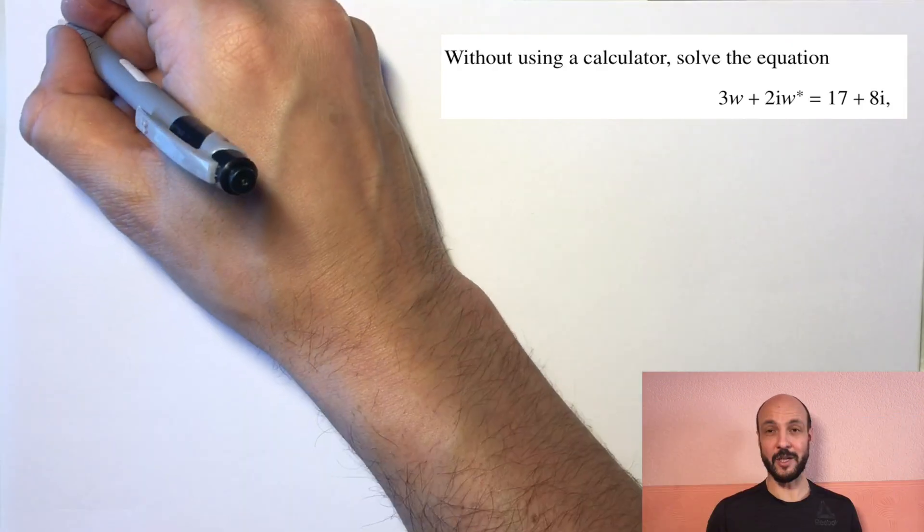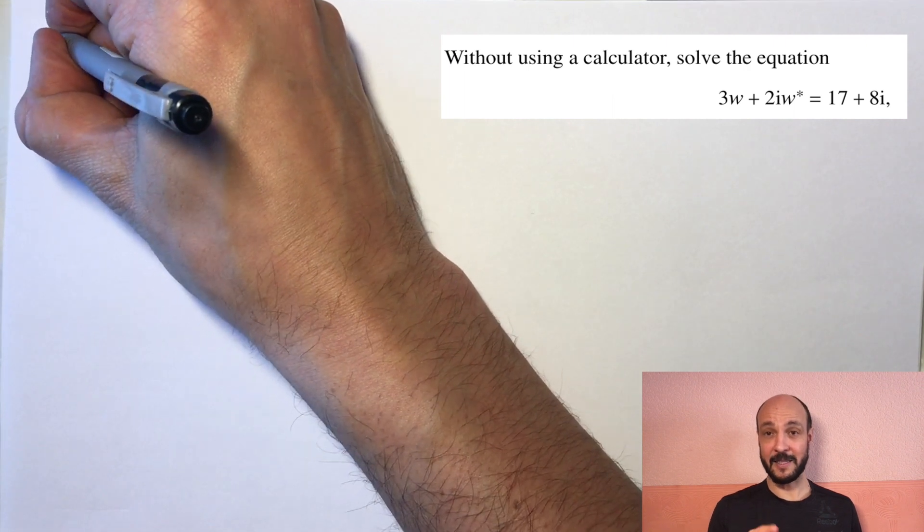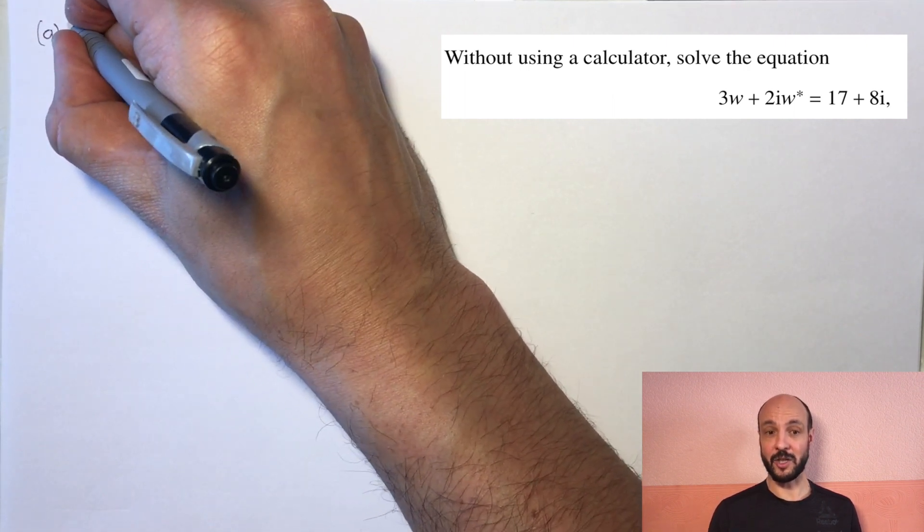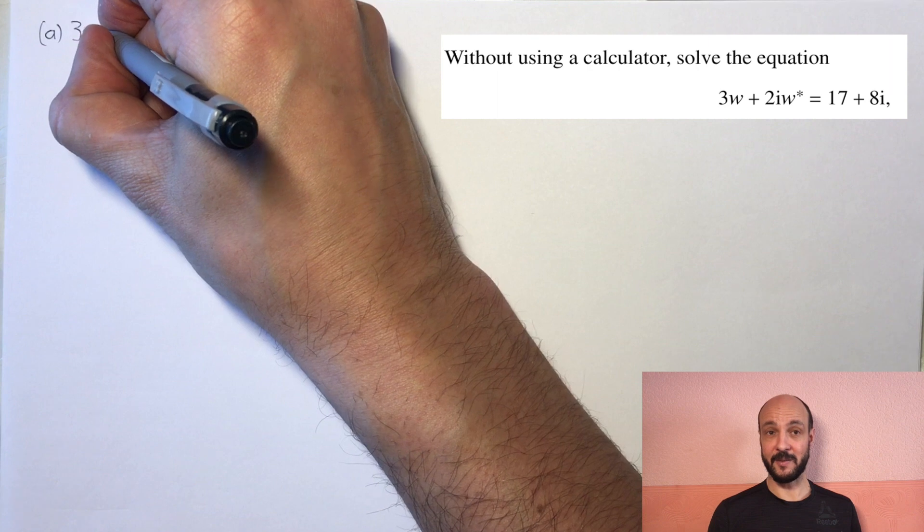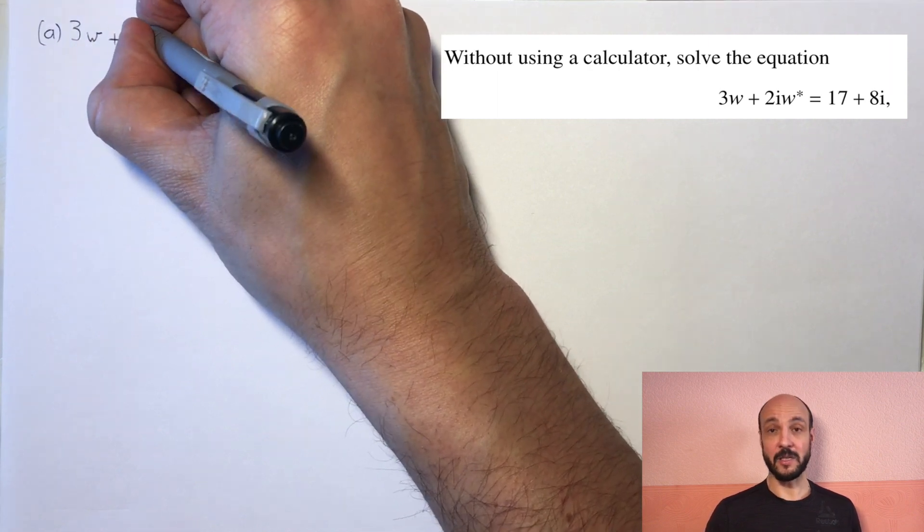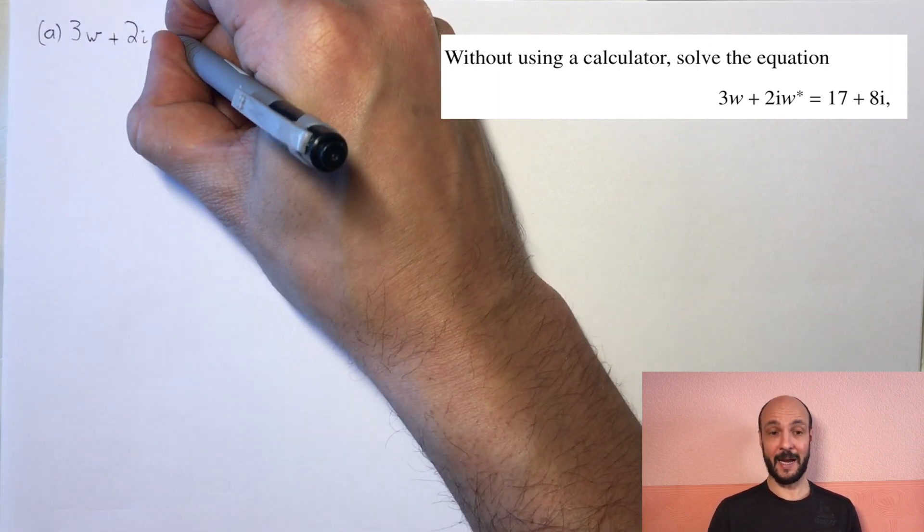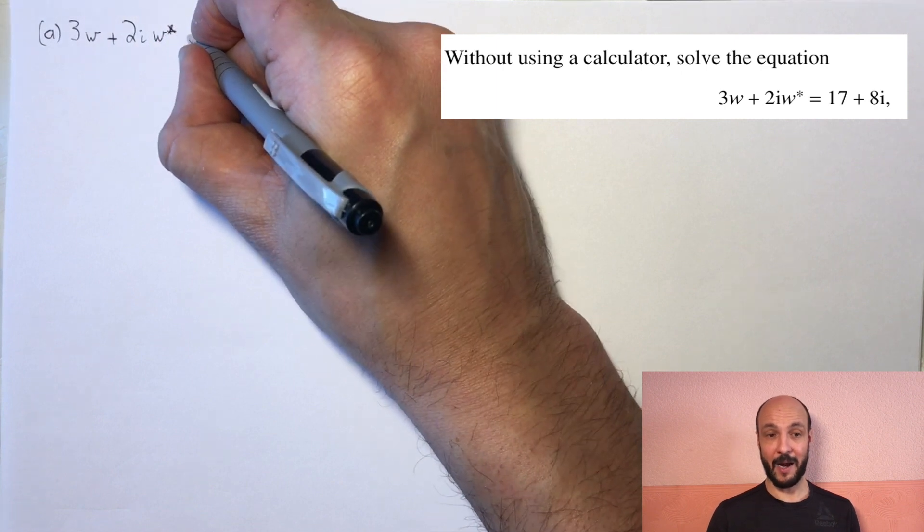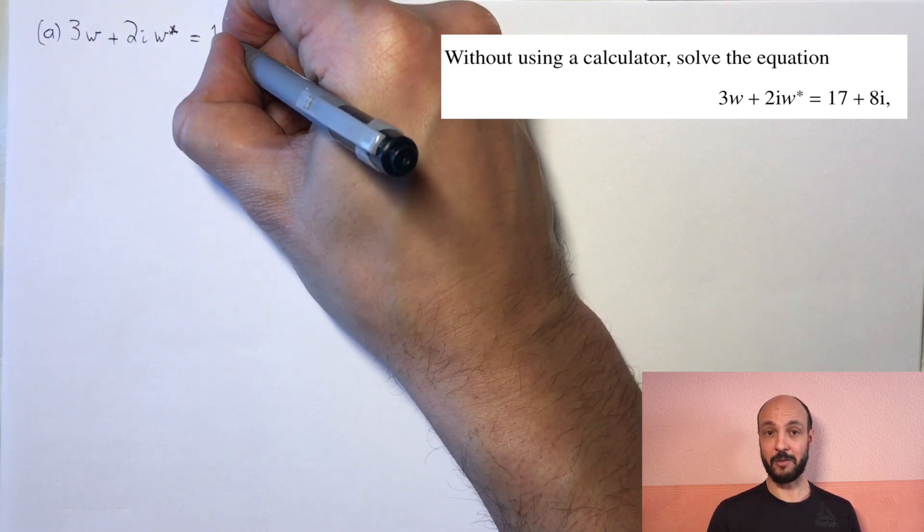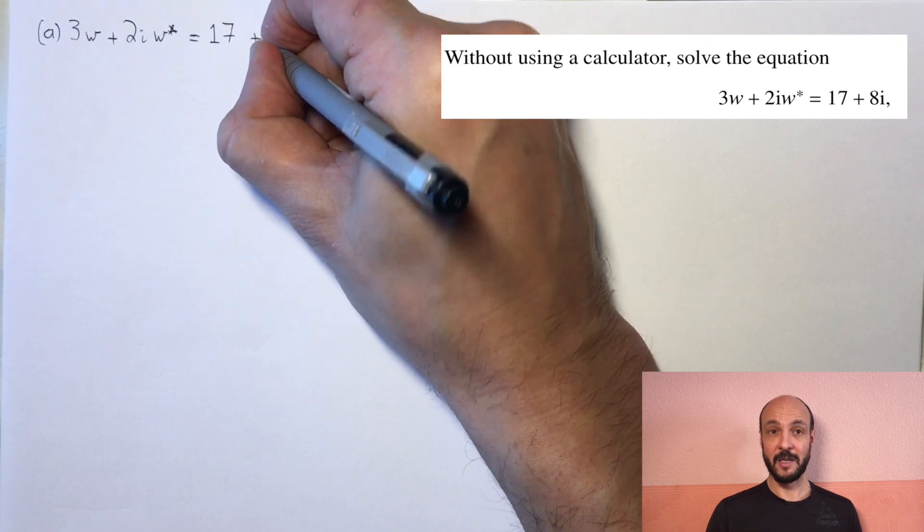Now, we just need to remember that a conjugate number, if you have x plus yi, the conjugate number is x minus yi. And here we can just substitute x plus yi for w and x minus yi for w star and then go through and solve our equation.